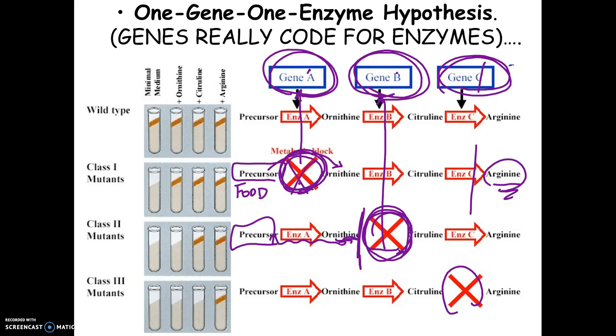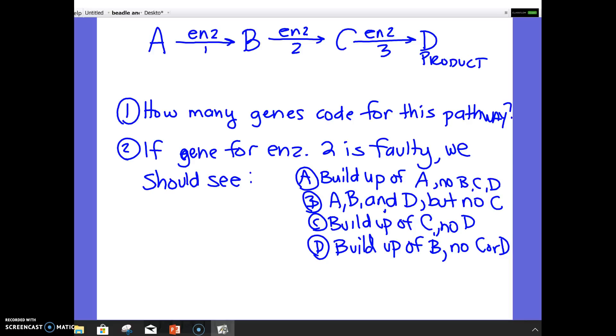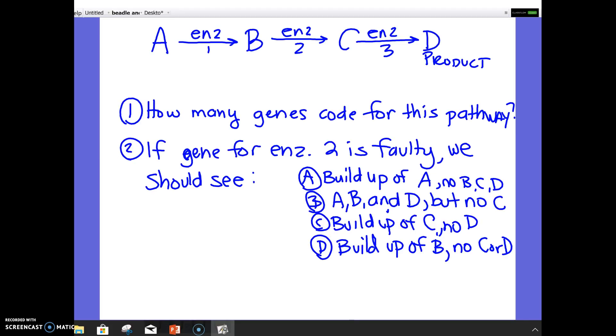So how would this translate to test questions? So based on the one gene, one enzyme hypothesis, this is what you might see on a test. So I give you a pathway, and let's say that the organism starts with A as its food source, and then it has these enzymes, and it breaks the food source down step by step by step into product. The first question I could ask you from a pathway like this, based on the one gene, one enzyme hypothesis, would be how many genes would there need to be to code for this pathway? How many enzymes are there? Three. So if one gene codes for one enzyme, how many genes? Three. So however many enzymes there are, that's how many genes there would need to be. So in this one, one gene to code for enzyme 1, one to code for enzyme 2, one to code for enzyme 3.